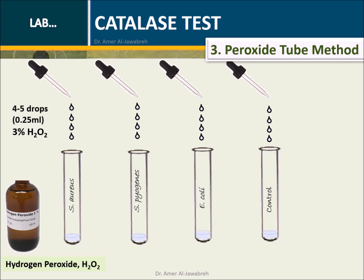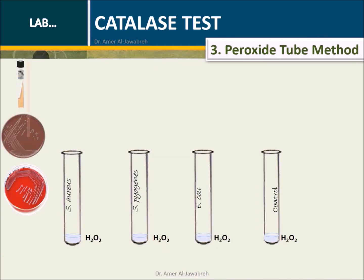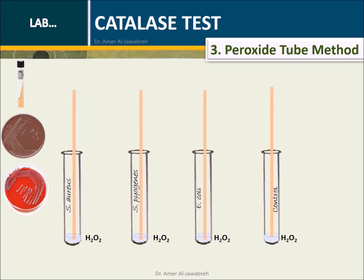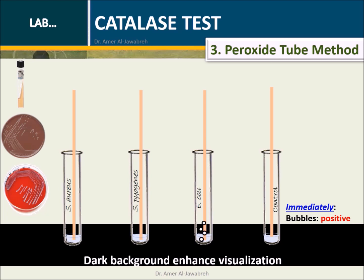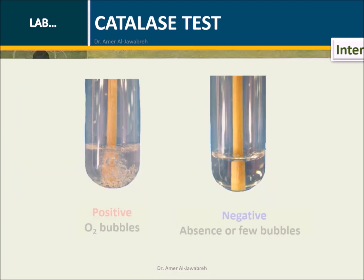Peroxide tube method: Add four to five drops of three percent hydrogen peroxide into a labeled 12 x 75 mm test tube. Using a wooden applicator stick, collect a few isolated colonies from a 24-hour plate and place into the test tube. Do not pick up any agar, particularly when using blood agar, due to the catalytic activity of RBCs. Place the test tube against a dark background and observe for immediate bubble formation at the end of the wooden stick.